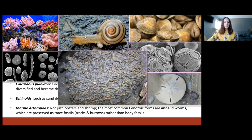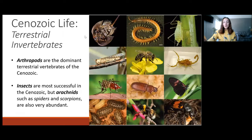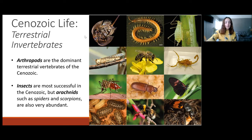Moving on to terrestrial invertebrates — as we mentioned at the beginning of the Cenozoic life section — arthropods such as insects were dominant and remain dominant throughout the Cenozoic. Insects are the most successful in the Cenozoic, but arachnids such as spiders and scorpions are also very abundant.